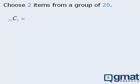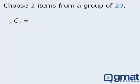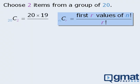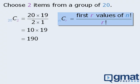Now it's your turn. I'll give you five seconds to evaluate twenty choose two in your head. Applying this shortcut, the numerator is equal to the first two values of twenty factorial and the denominator is two factorial. We can speed up our calculations by recognizing that twenty divided by two times one simplifies to ten, and ten times nineteen equals one hundred and ninety. So twenty choose two equals one hundred and ninety.